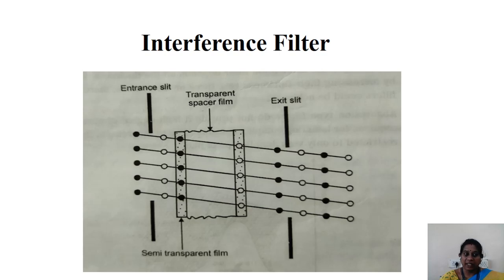So interference filters are used to allow much narrower band of wavelengths and they are similar to monochromators in selectivity.